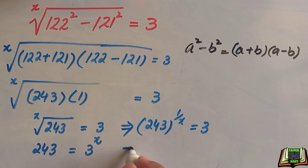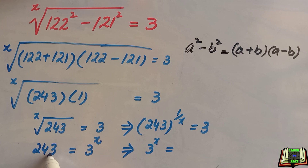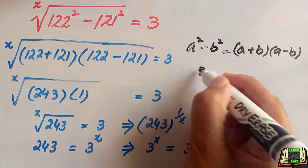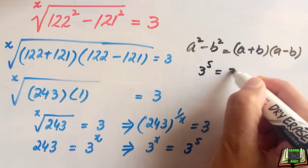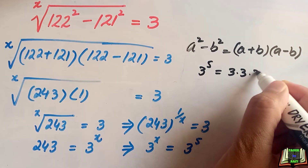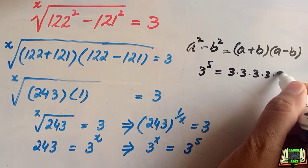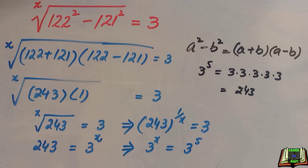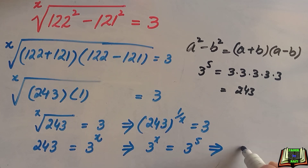So 3 raised to the power x is equal to 243. Now 243 can be written as 3 raised to the power 5, because 3 × 3 × 3 × 3 × 3 = 243. So we replace 243 with 3 to the power 5, and since the bases are the same we can equate the powers.